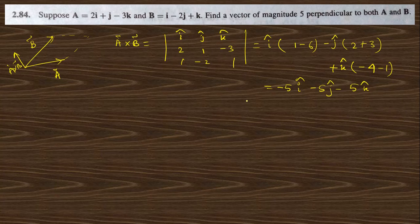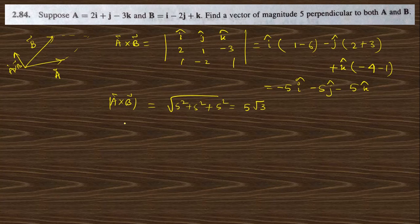The magnitude of a cross b is √(5² + 5² + 5²) = √75 = 5√3. The required vector has magnitude 5, so it equals 5 times the unit vector in the direction of a cross b.